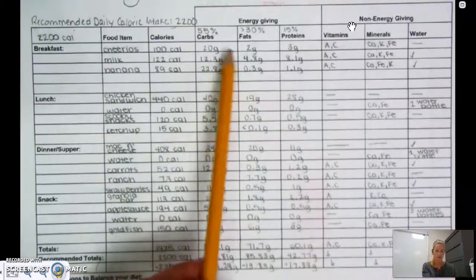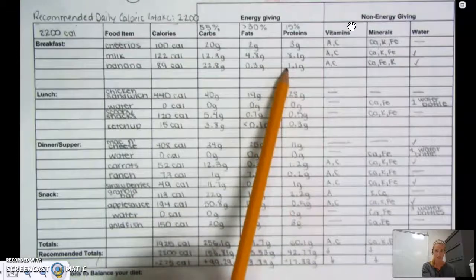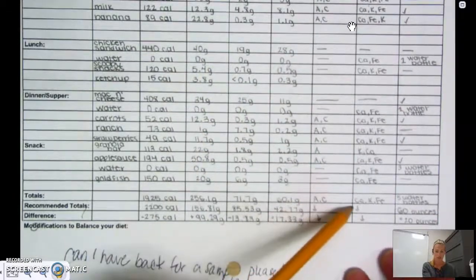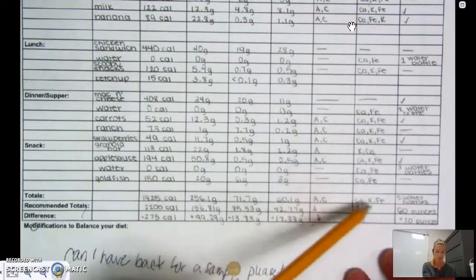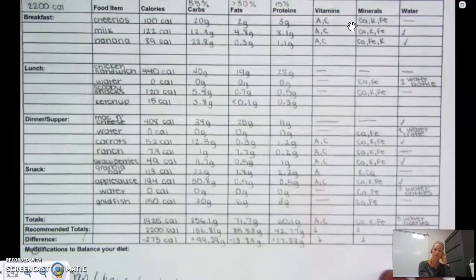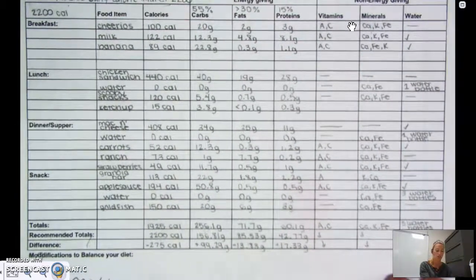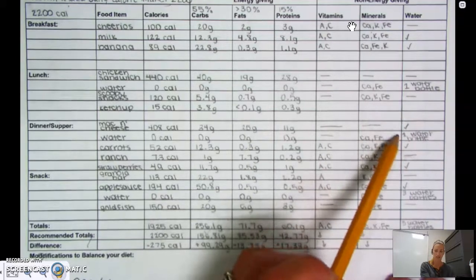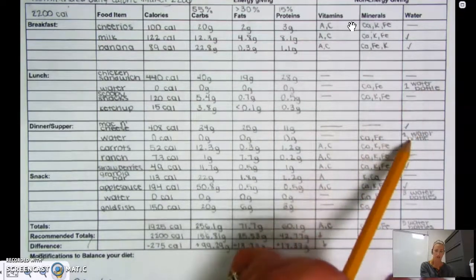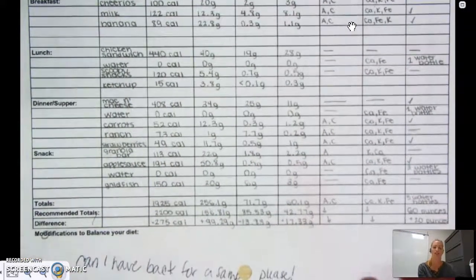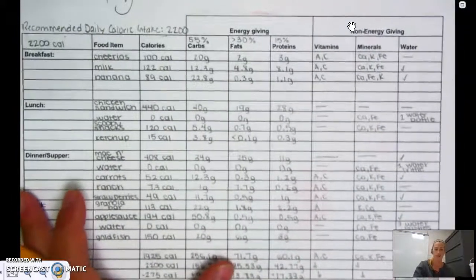You would complete that for all the rest of the energy-giving nutrients, and then the non-energy-giving nutrients, you can just put down your totals of which ones you had. Okay, please do record your water intake if you're drinking water throughout the day. If you're not sure how much it is, you might just have to do your best guess, but she did it according to the amount of water, and obviously this would not be accounting for the water that she's getting from food items, okay?